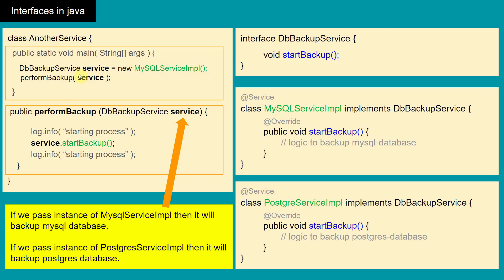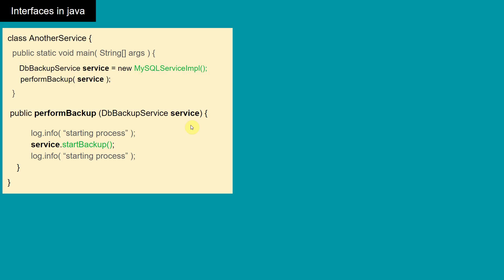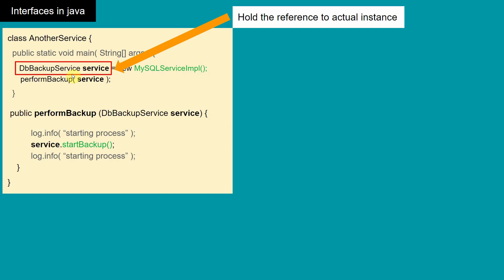In the main method we have created an instance of MySQLServiceImplementation and are passing that instance to 'performBackup'. But this method can also accept PostgresServiceImplementation. If we change to PostgresServiceImplementation, 'performBackup' will still accept it because both are of DBBackupService type, and depending on the type of instance, 'performBackup' will behave accordingly.